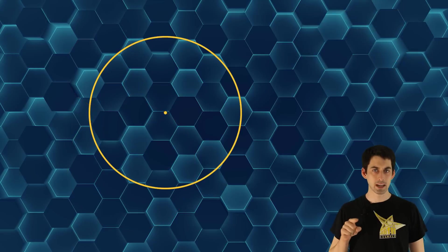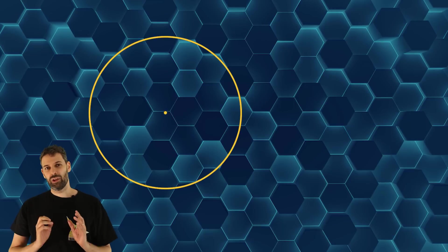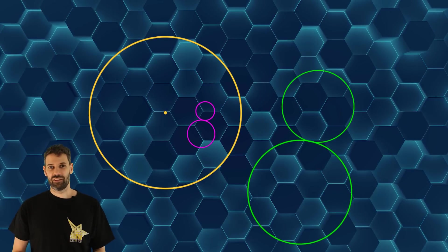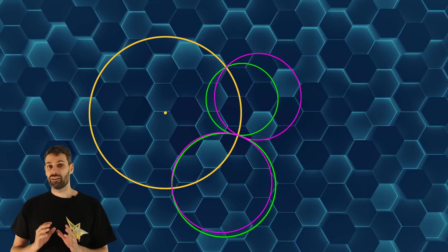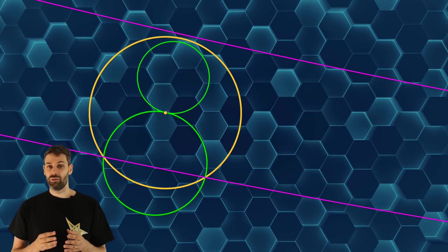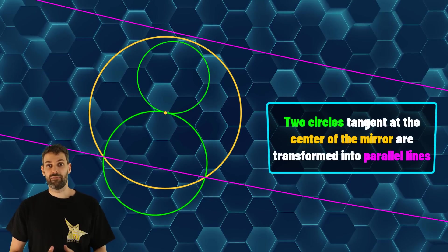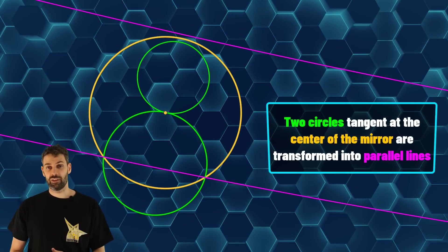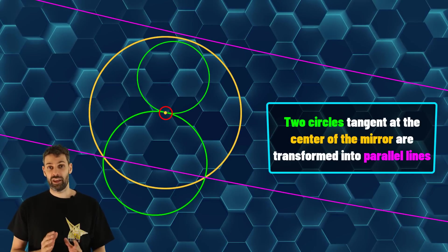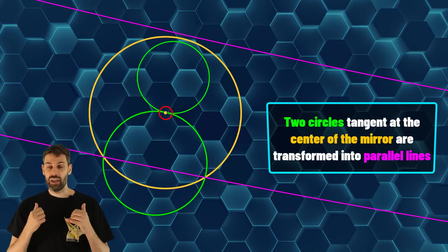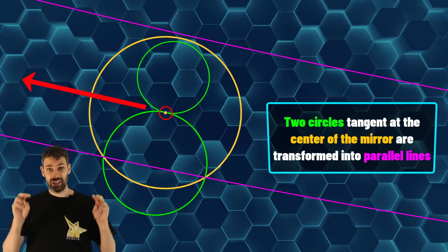What if the tangency point is the center of the mirror? I'm glad you asked it. It will come back later. Take these two tangent circles and move them such that the tangency point will become the center of the mirror. As you can see, the two circles will be transformed in two lines, parallel lines. This came from the fact that these two circles have only one intersection point, which is the center of the mirror, and the center of the mirror has no image. In a certain sense, the two parallel lines are tangent at infinity.